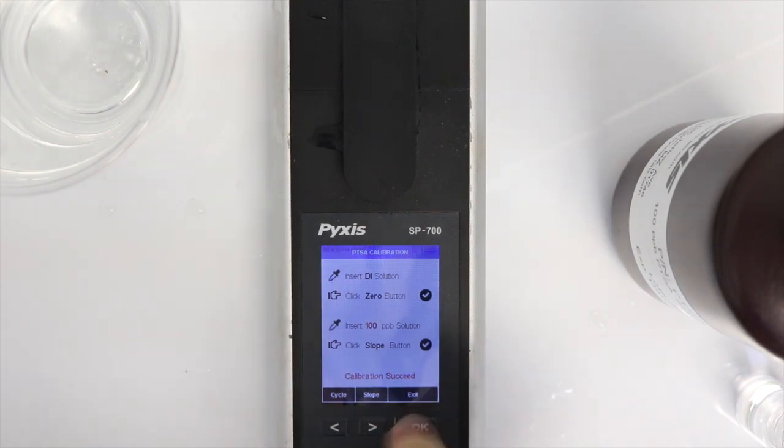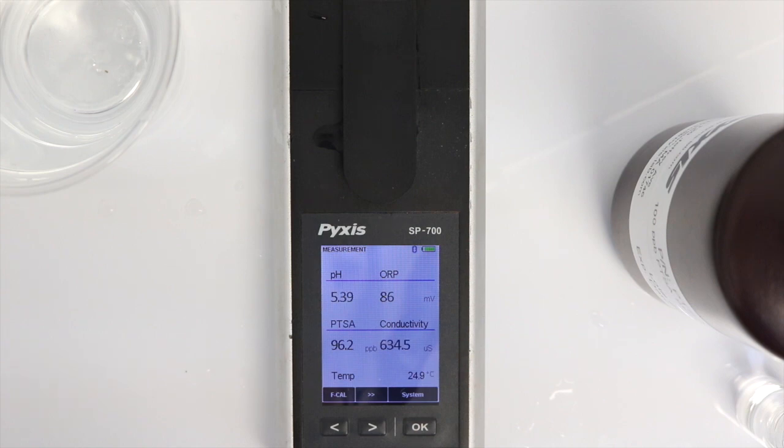Press the OK key to exit to the main display menu. The Pyxis SP700 should read within 1 ppb of 100 and is now calibrated.